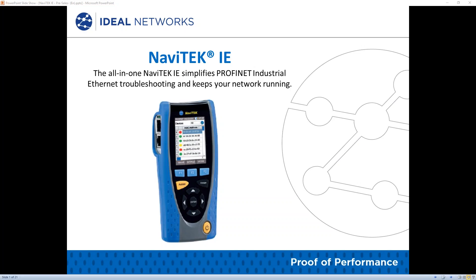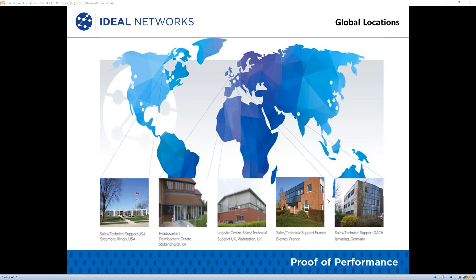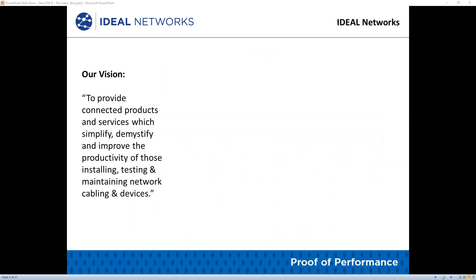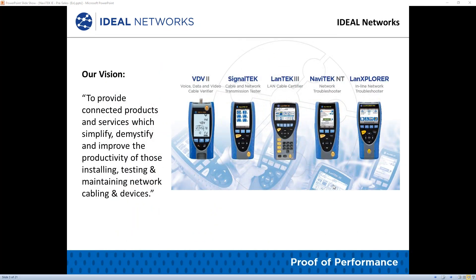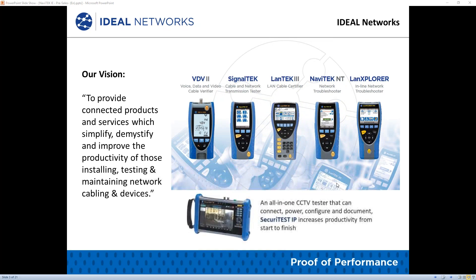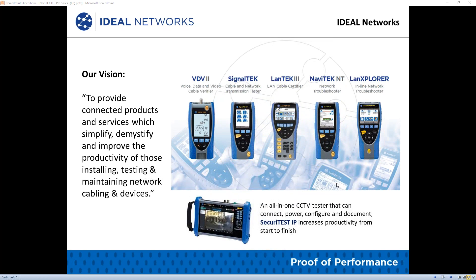Welcome to Ideal Networks. Today we introduce the Navitech IE — the all-in-one device that simplifies Profinet industrial Ethernet troubleshooting and keeps your network running. Ideal Networks is a global company with offices across the world in Europe, China, North and South America, and Australia. We offer a range of data cable and network testers, from easy-to-use cable verifiers with the VDV2 series to cable transmission testers and copper and fiber cabling and certifiers.